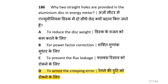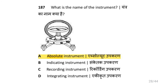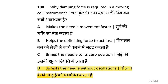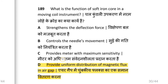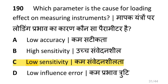Why are two small holes provided in the aluminium disc in an energy meter? To arrest the creeping error. What is the name of the absolute instrument? Tangent galvanometer. Why is damping force required in a moving coil instrument? To arrest the needle without oscillations. What is the function of the soft iron core in a moving coil instrument? That is to provide uniform distribution of magnetic flux in the air gap. Which parameter causes the loading effect on a measuring instrument? Low sensitivity.